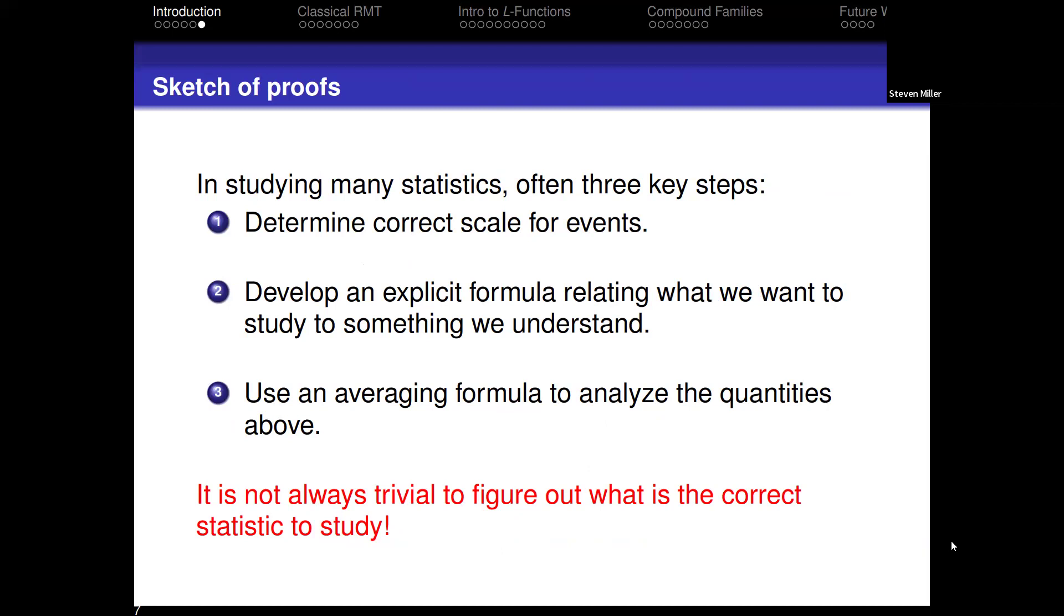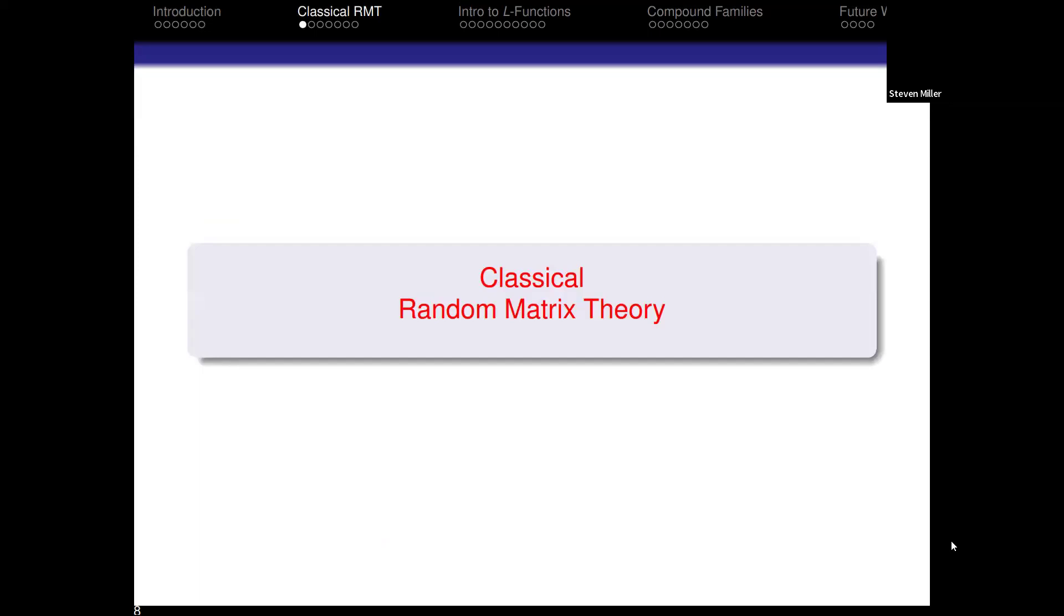There's three general things we need to be able to do to get results. We have to figure out what is the correct scale to study our system. We need to create some kind of explicit formula that takes what we want to study and converts it to something we're able to study. And we need some kind of averaging formula that allows us to actually calculate on the side we can do things. It's not always easy to figure out what is the right statistic to look at that's going to be amenable to analysis.